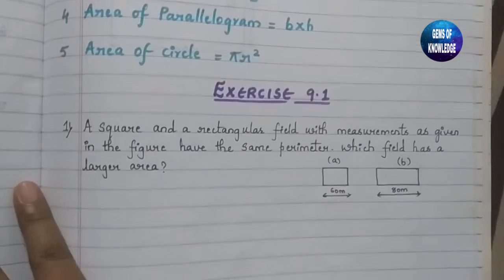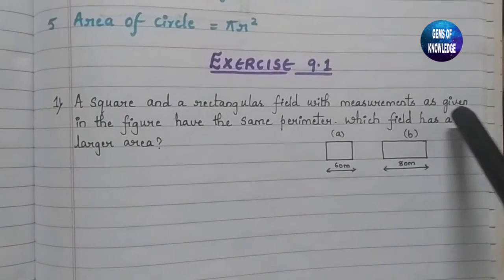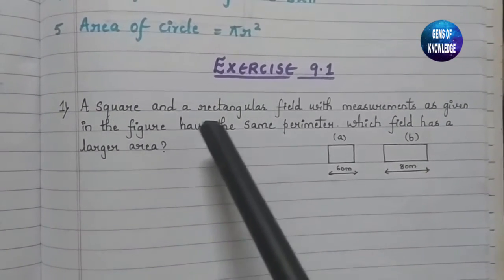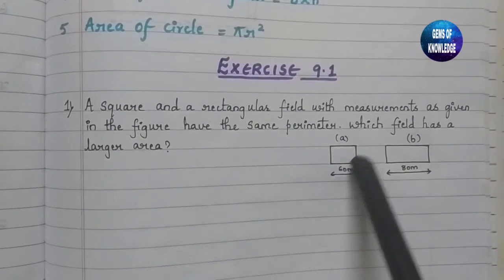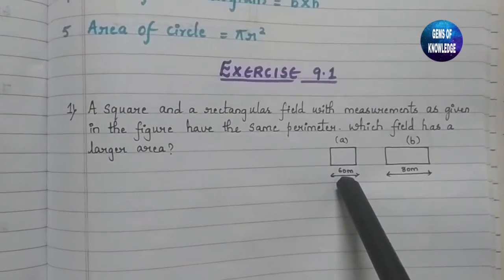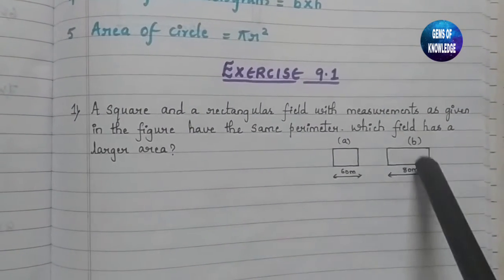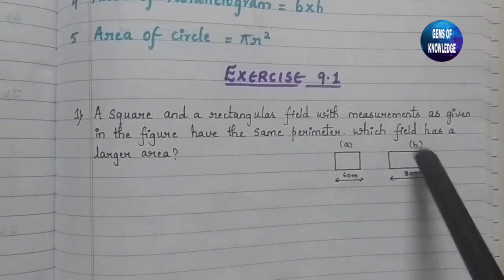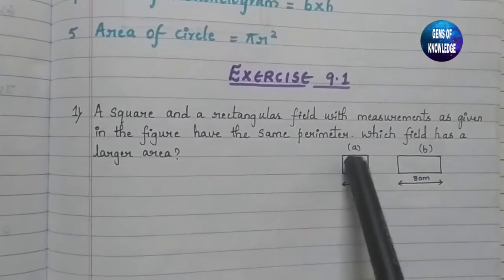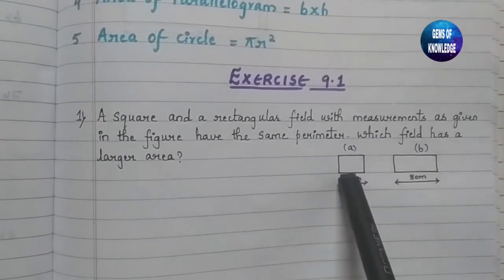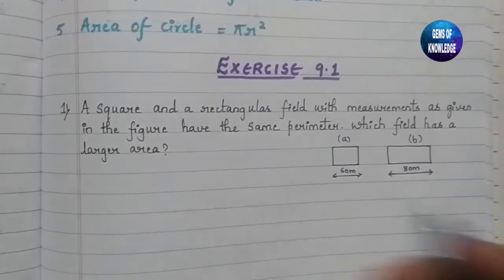We'll start directly with Exercise 9.1. The first question: a square and a rectangular field with measurements given in the figure have the same perimeter. The square field has a side of 60 meters and the rectangular field has a length of 80 meters. We need to find which field has the larger area, so first we find the area of both.